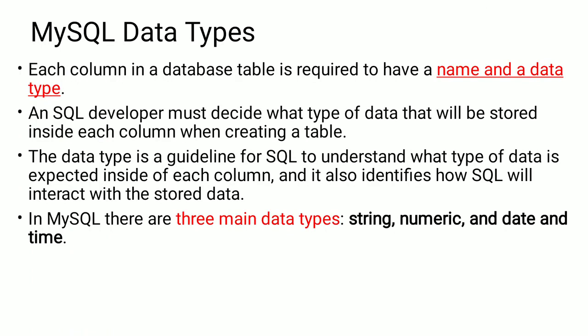Let's see some MySQL data types. Each column in a database table is required to have a name and a data type. An SQL developer must decide what type of data will be stored inside each column when creating a table. The data type is a guideline for SQL to understand what type of data is expected inside each column. In MySQL there are three main types: string, numeric, and date and time.